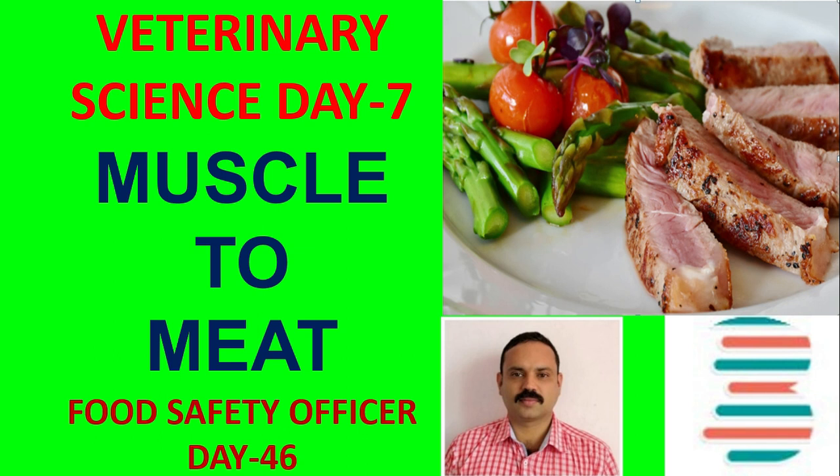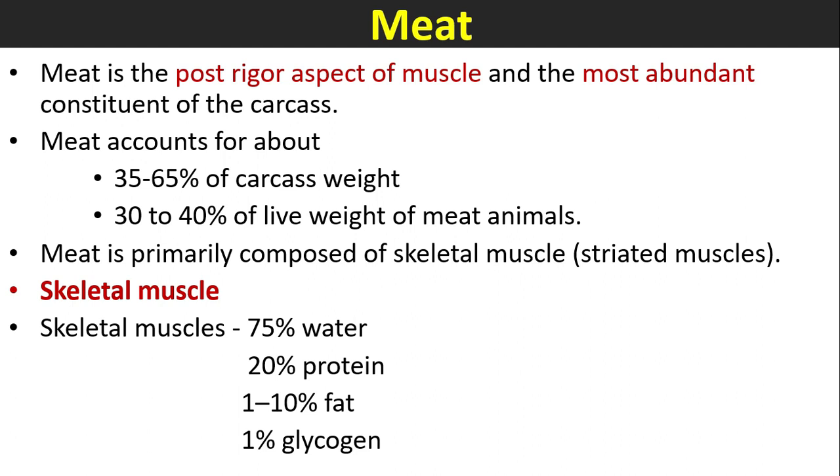Hi friends, welcome to Biology Tutor. Today we are going to discuss rigor mortis and aging of meat. Let us discuss the muscle-to-meat topic today. Meat is the post-rigor aspect of muscle.